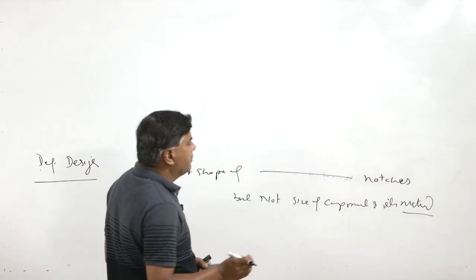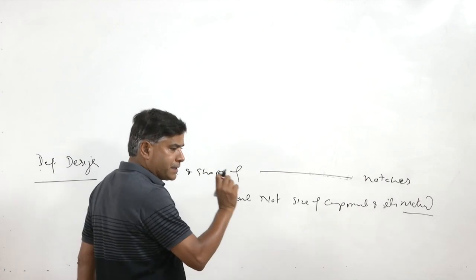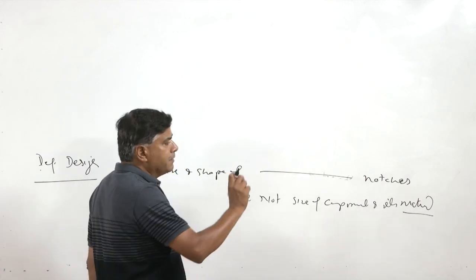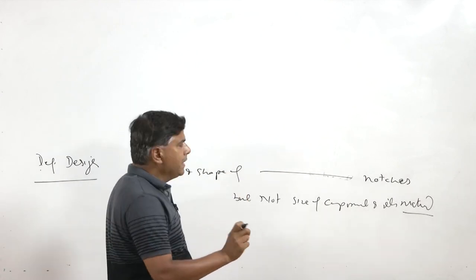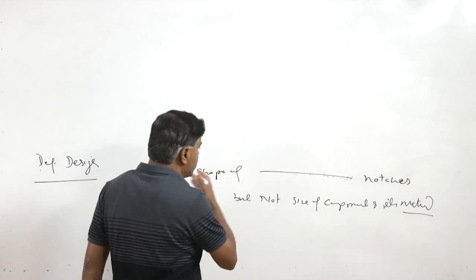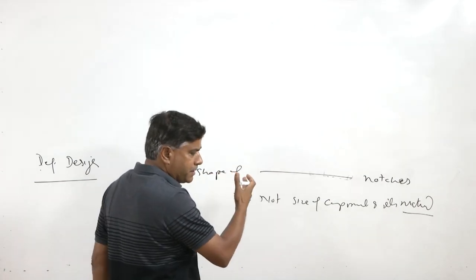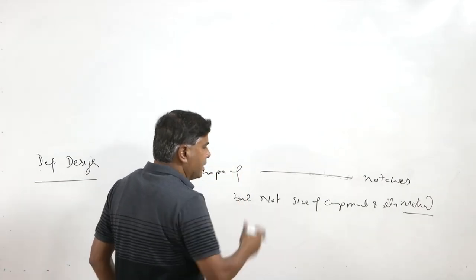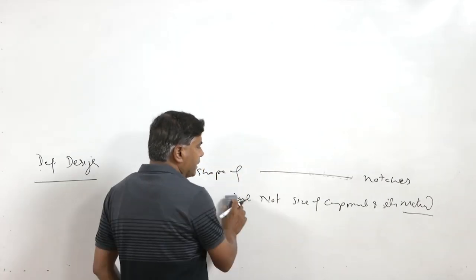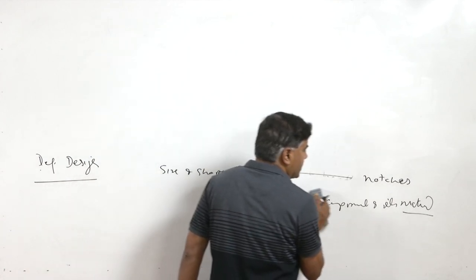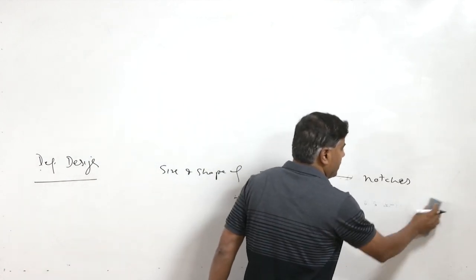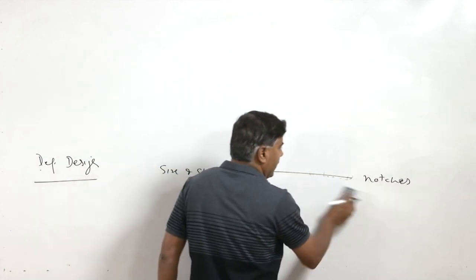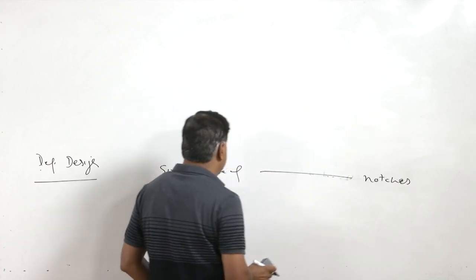If the material is brittle, the stress concentration will remain high. If the material is ductile, whenever there is blunting of the crack tip, the stress concentration is reduced due to the increase in crack tip radius.